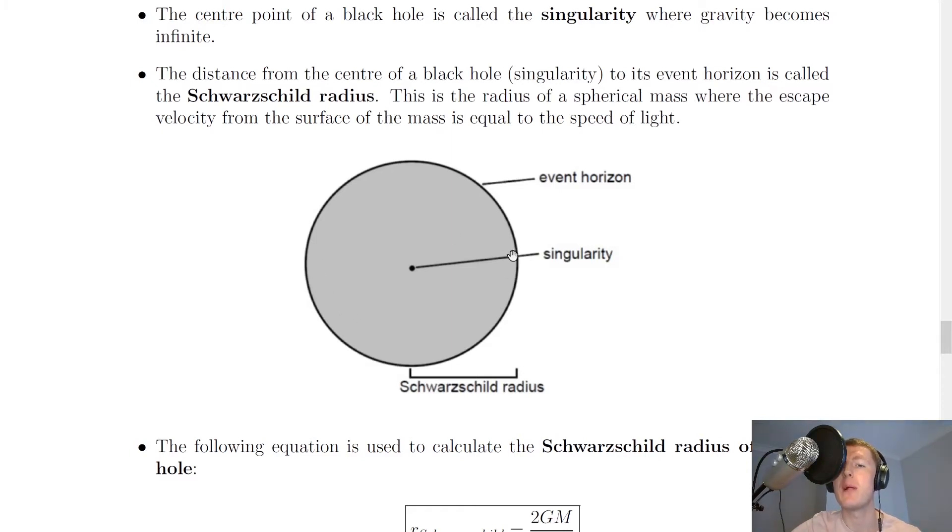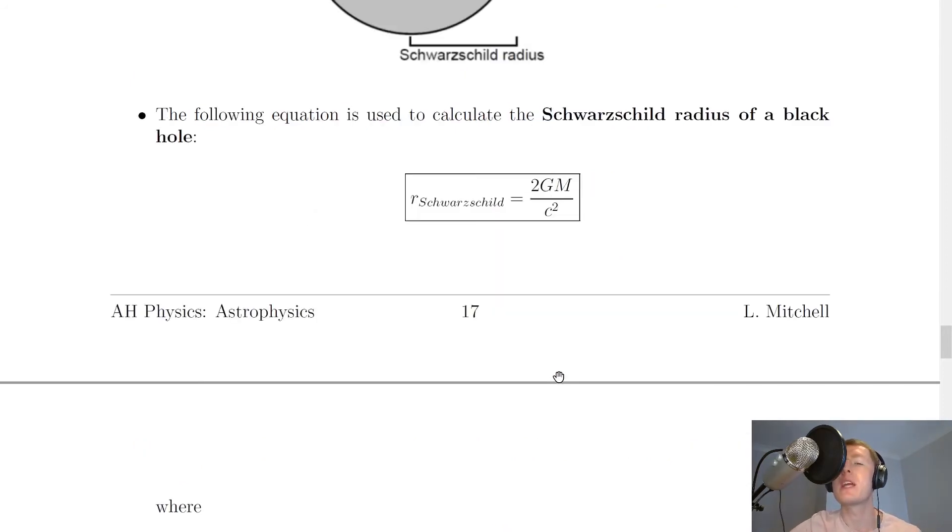So here's our event horizon in the black hole. Here's our singularity, where gravity becomes infinite in the centre. And we're saying that the radius from the singularity to the edge of the event horizon is called the Schwarzschild radius. And we can actually calculate the Schwarzschild radius for different black holes.